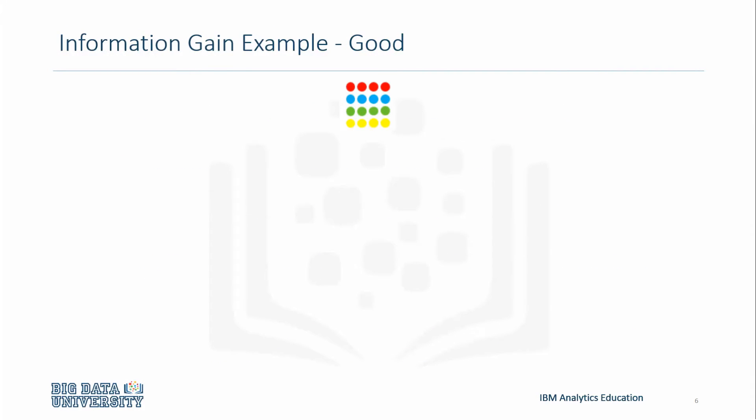Let's take a more in-depth look at entropy and information gain. Here we have our dataset at the root node consisting of four colors: red, blue, green, and yellow.